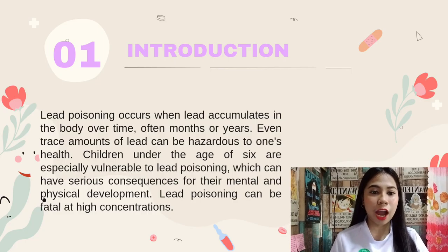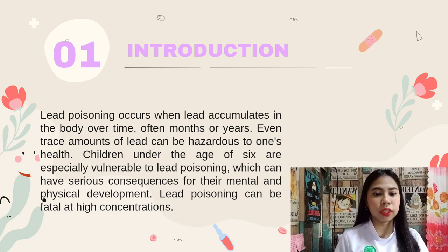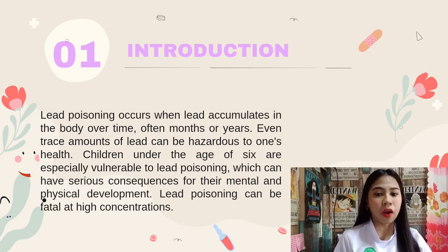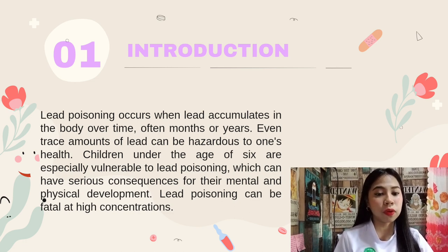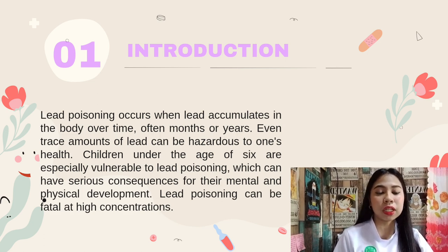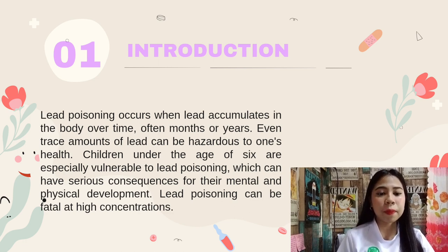Let us now start with our introduction. Lead poisoning occurs when lead accumulates in the body over time, often months or years. Even trace amounts of lead can be hazardous to one's health. Children under the age of 6 are especially vulnerable to lead poisoning, which can have serious consequences for their mental and physical development. Lead poisoning can be fatal at high concentrations.